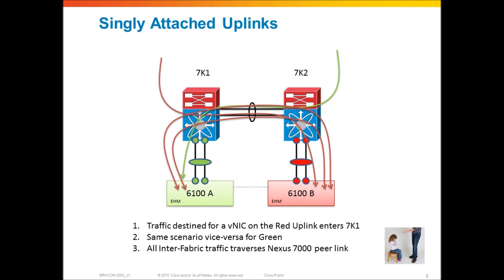As you can see, there can be a lot of traffic potentially on that inter-switch link between the two Nexus 7000s. As you're sizing the deployment and adding more servers and VMs to your UCS deployment, you may need to pay attention to that inter-switch link and the amount of traffic flowing between fabrics - as well as traffic from the network to UCS - especially if you are singly attaching your fabric interconnects to an upstream switch.